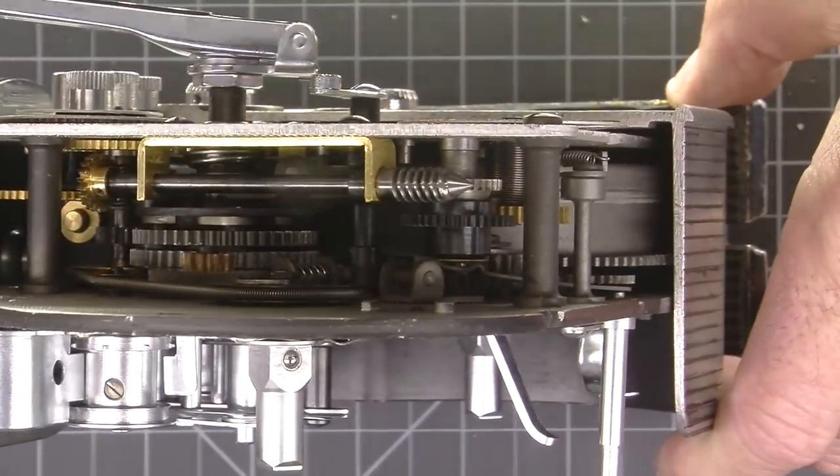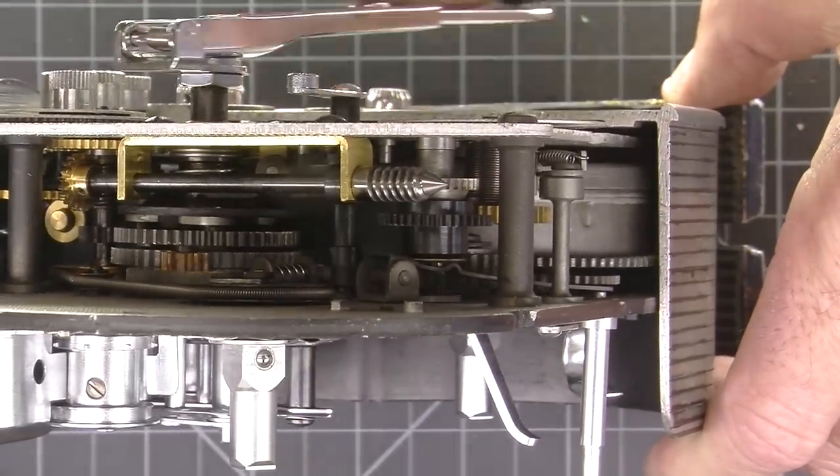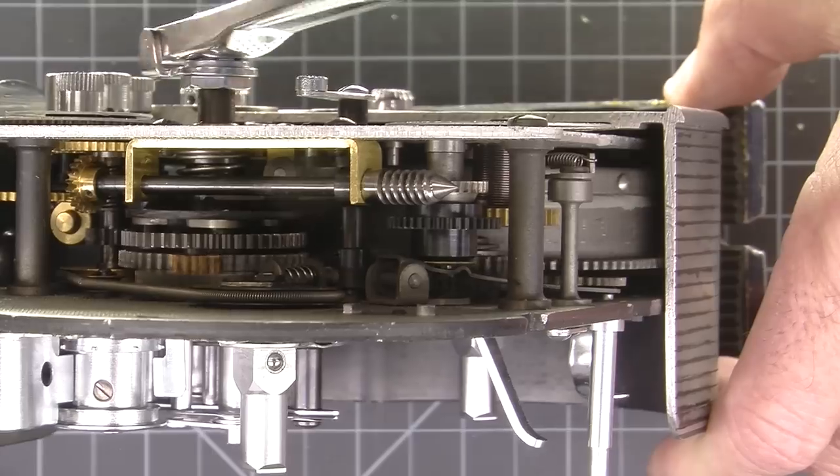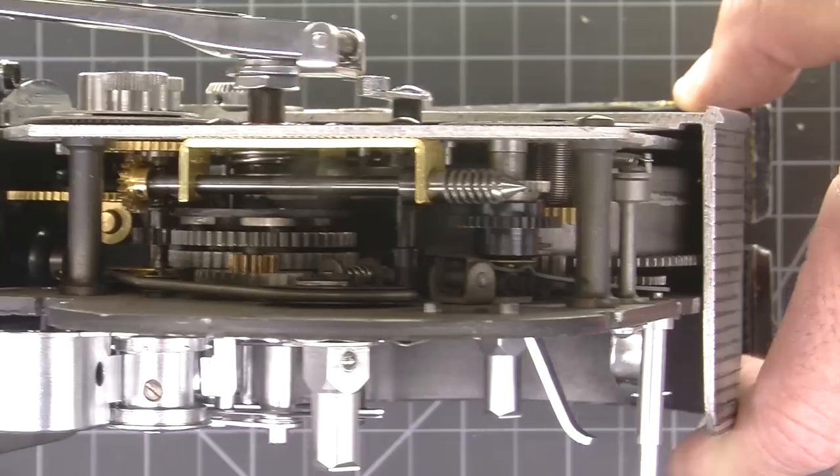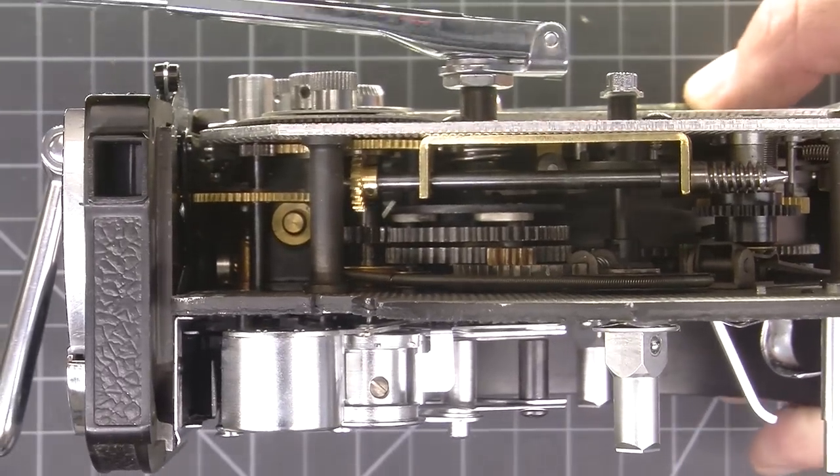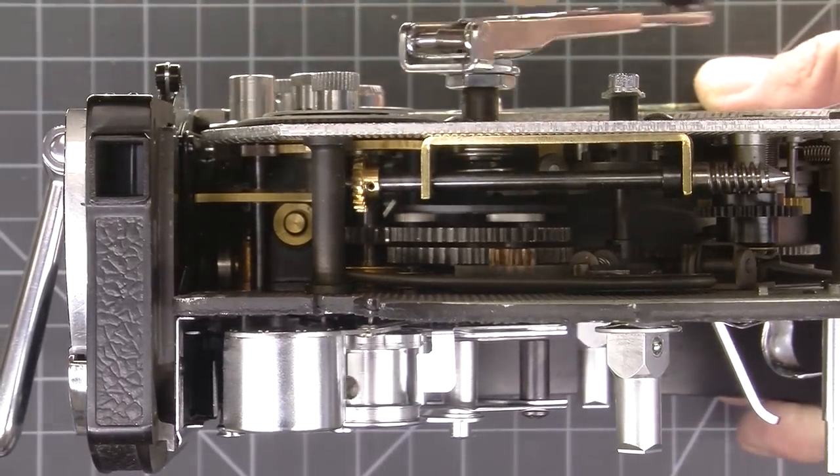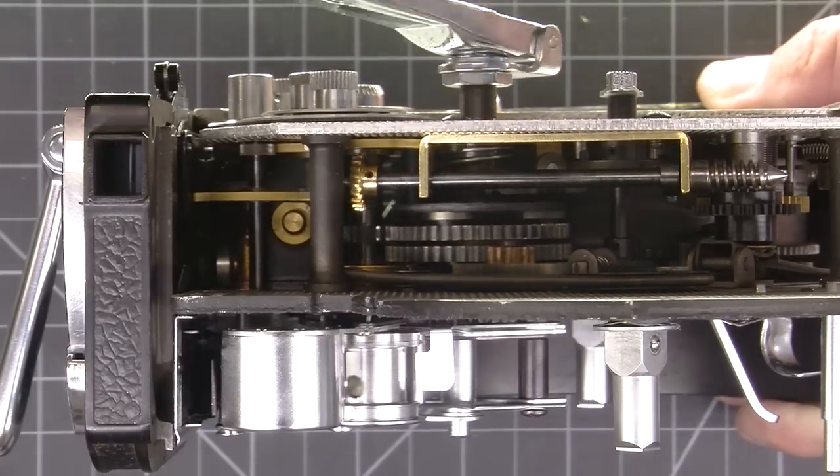As you can see, the motor is attempting to wind. As this one has a broken spring in it, there's no tension. And then when you change directions, this is the direction the motor drives the camera.